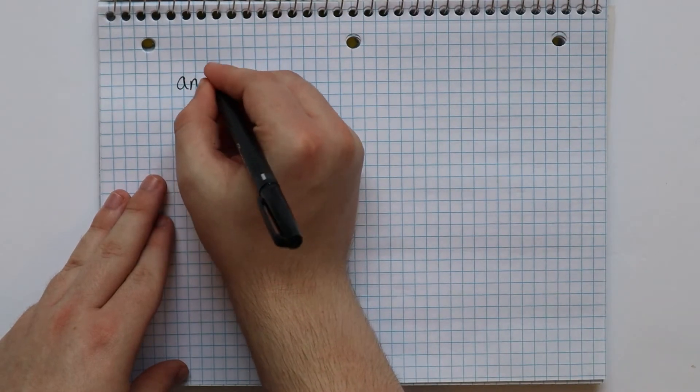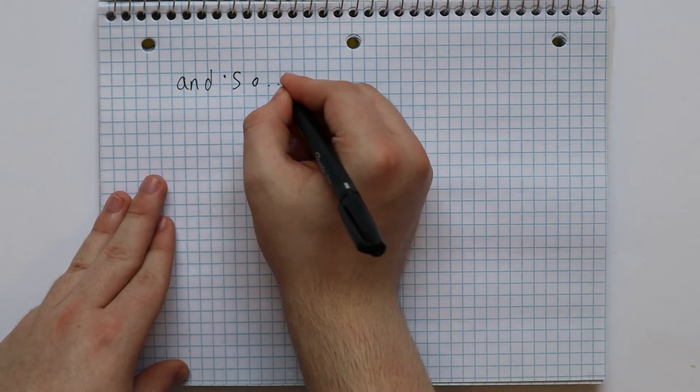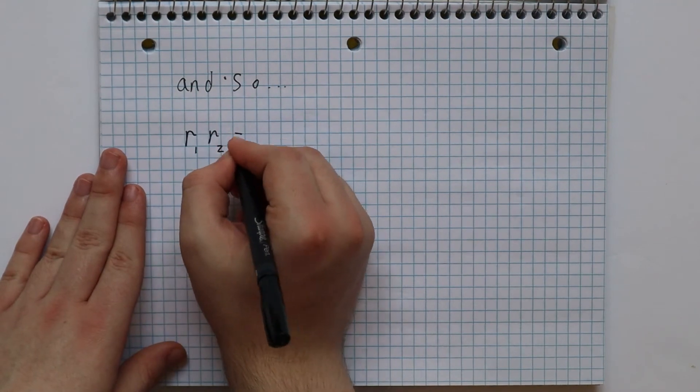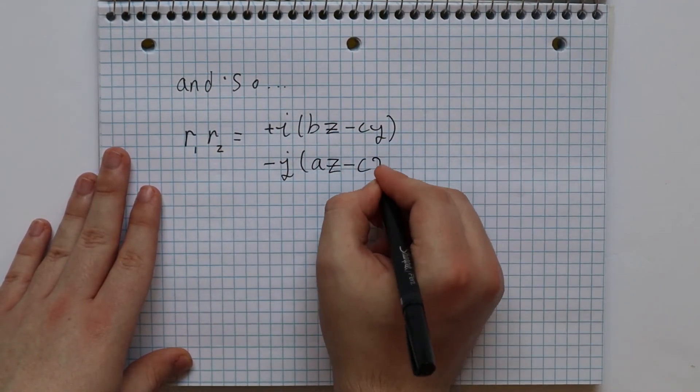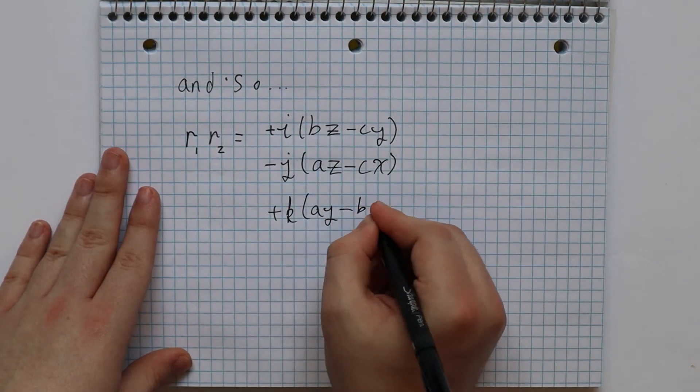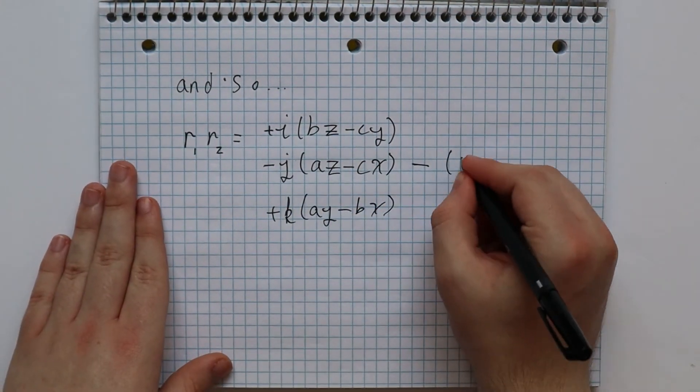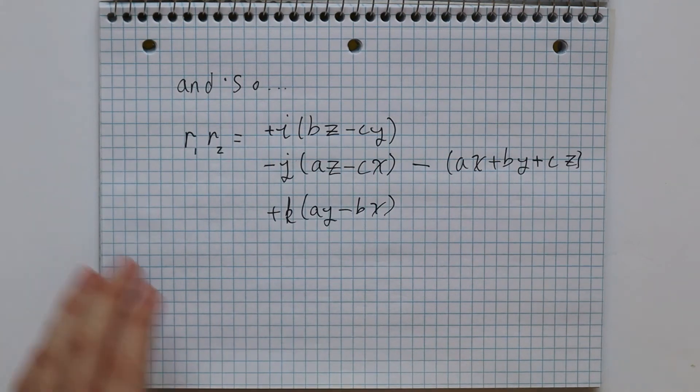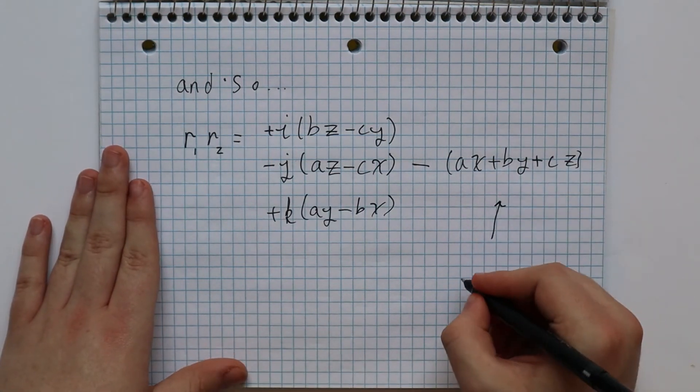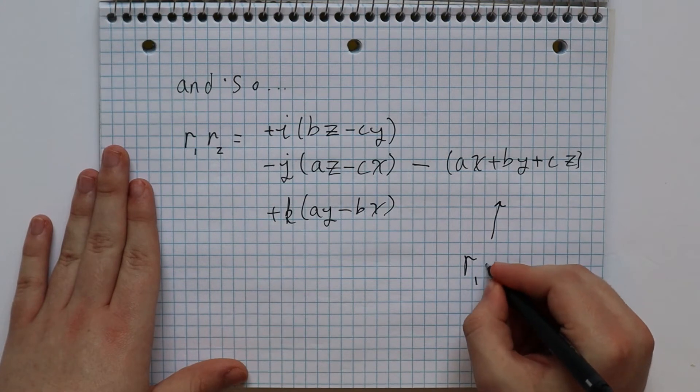But we can start to see the vector multiplication hidden inside. There are three terms here I want to focus on right now: the negative ax, the negative by, and the negative cz. This should look very familiar to anyone who has done a dot product before. It is exactly the negative of the dot product of r1 and r2, if r1 and r2 were vectors.